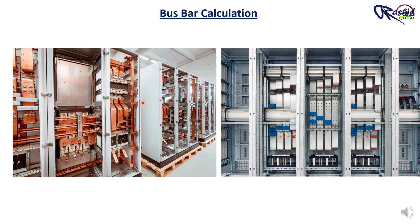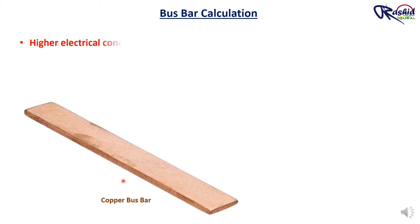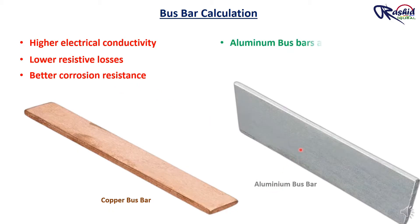Either copper busbar or aluminium busbars. Copper busbars have higher electrical conductivity, lower resistive loss and better corrosion resistance compared to aluminium busbars. However, aluminium busbars are lighter and more cost effective.